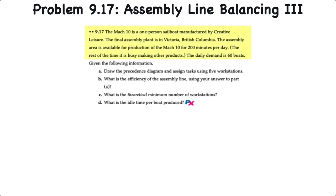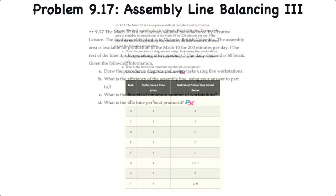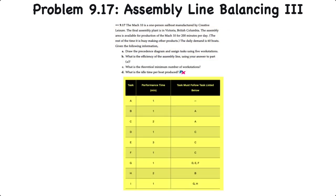The Mach 10 is a one-person sailboat manufactured by Creative Leisure. The final assembly plant is in Victoria, and the assembly area is available for production for 200 minutes per day. The rest of the time, it's busy making other products. The daily demand is 60 boats. The tasks, performance time, and precedence relationships are in the table below.